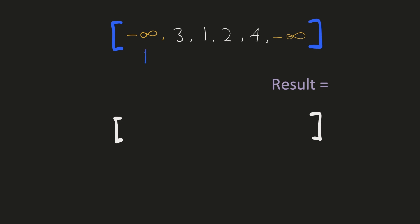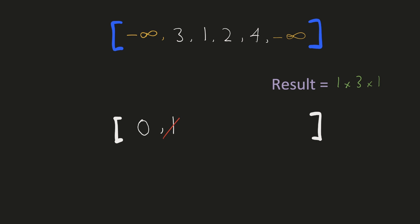Let's look at a complete example. For the first element minus infinity, there are no elements in the stack, so we directly add its index to the stack. For the next element, we compare it with the top of the stack and check if it is smaller. Our top element is minus infinity and 3 is not smaller than that, so we directly append its index. For the next element 1, our top of stack is 3 and 1 is less than 3, so we've found the next smaller element for 3. The number of elements to the left is its index minus the previous index on the stack, and the number on the right is the current index minus its index. We add 1 × 3 × 1 to our result, pop that index from the stack, and add the current index.